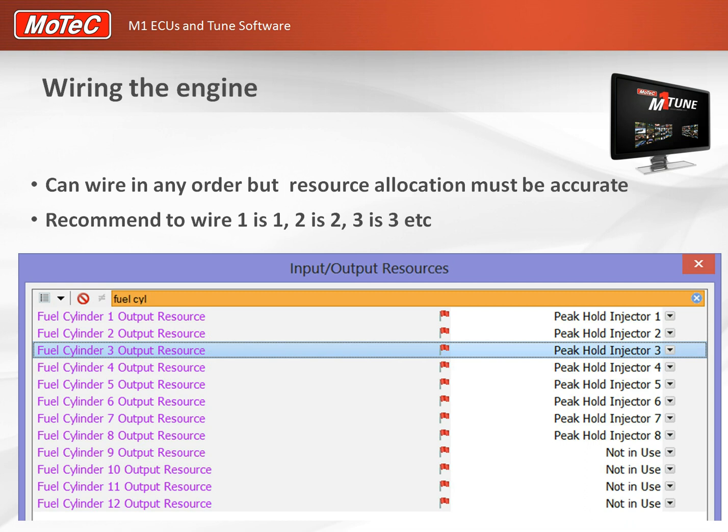When you wire the engine and configure the input/output setup allocation following this advice, cylinder 1 is allocated to peak-and-hold injector 1, cylinder 3 to peak-and-hold injector 3, and so forth. With ignition, in the case of wasted spark you can allocate one ignition output to trigger two cylinders. It's just a drop-down menu to choose from beside each drive - nice and straightforward.